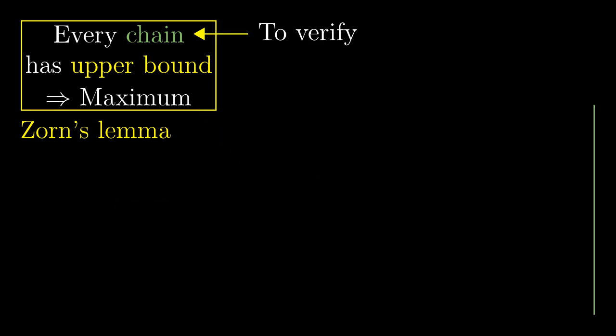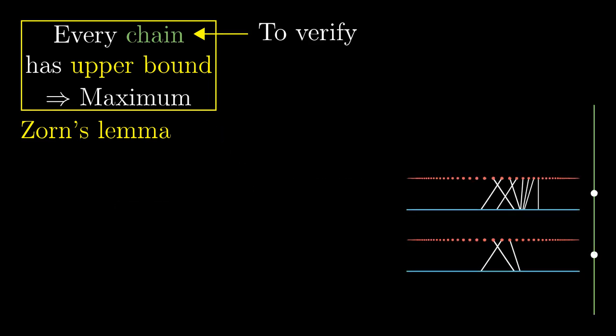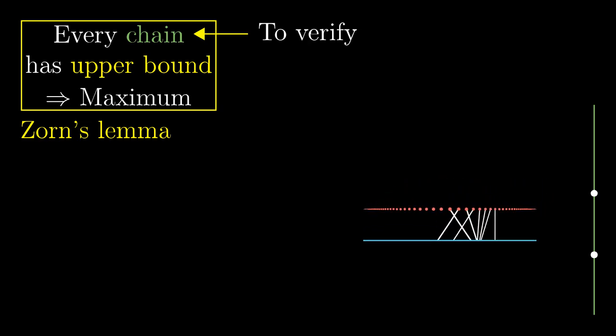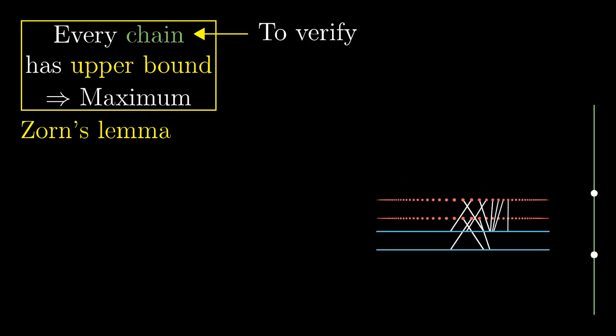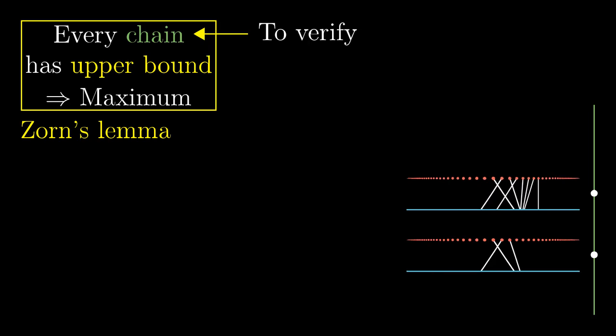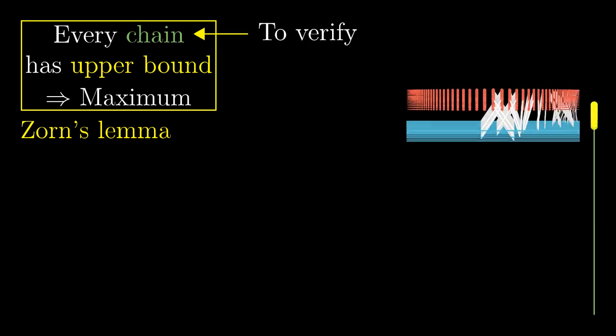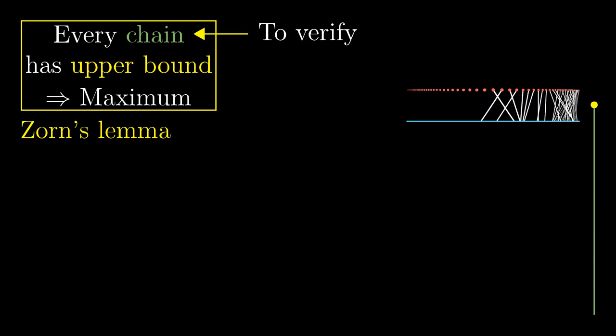That verification is straightforward. In a chain, every two matchings are comparable in the sense that their union is also a partial matching. To find the upper bound of the chain, it is sufficient to take the union of all matchings in the chain. Let's justify that this union is also a partial matching.